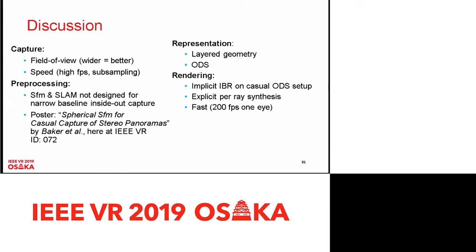We use implicit IBR on a casual ODS setup. The idea is rather straightforward — we perform explicit per-ray synthesis, which is not given in standard ODS. The method is very fast, coming down essentially to texture lookups. The only computation required is finding intersections with the circle, which is very straightforward.